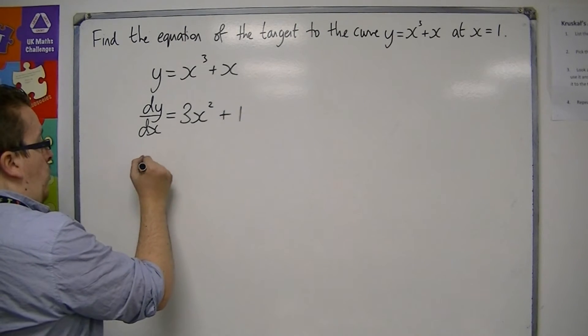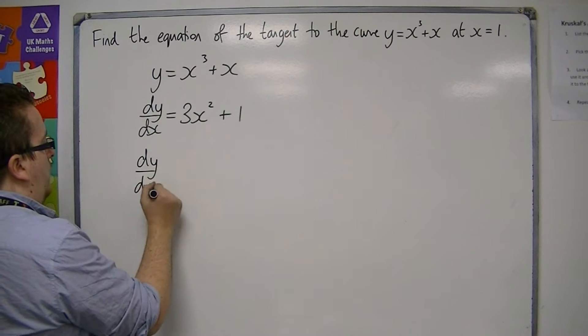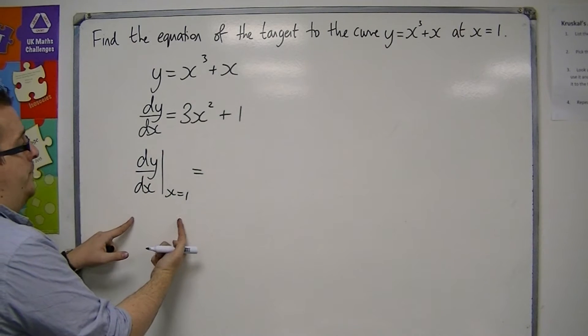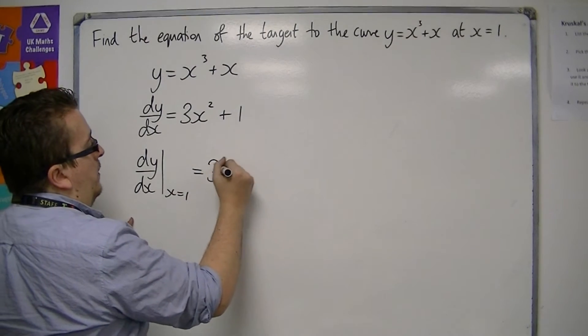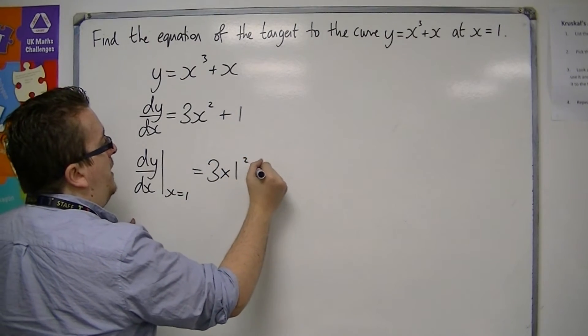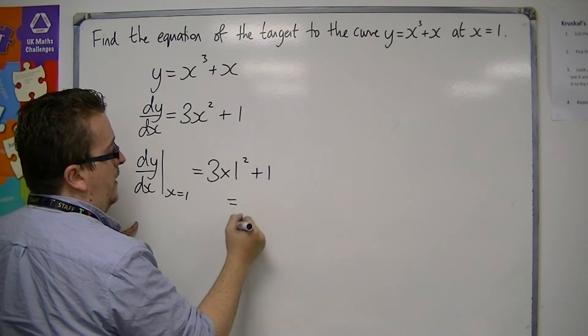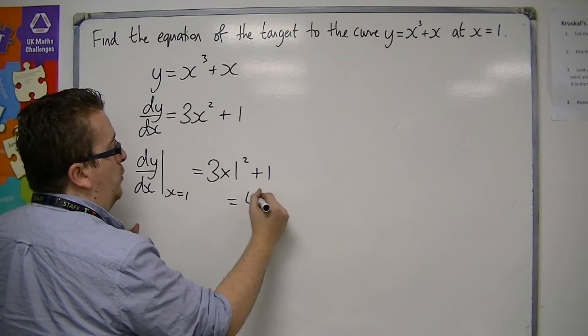At x equals 1, the gradient, notice the notation, is 3 lots of 1 squared plus 1. So you substitute x as 1 into the gradient. So 3 lots of 1 plus 1 is 4.